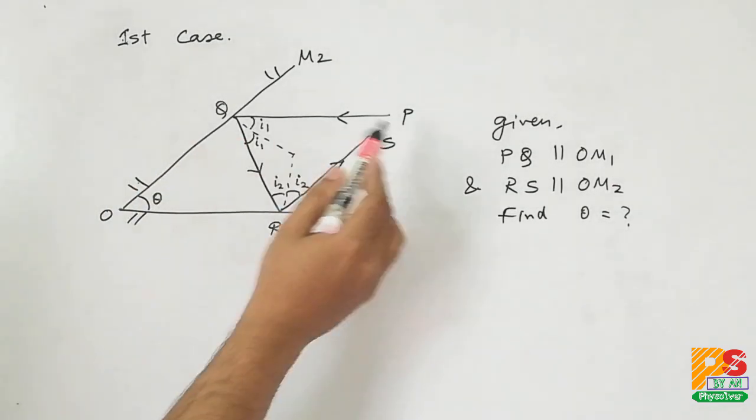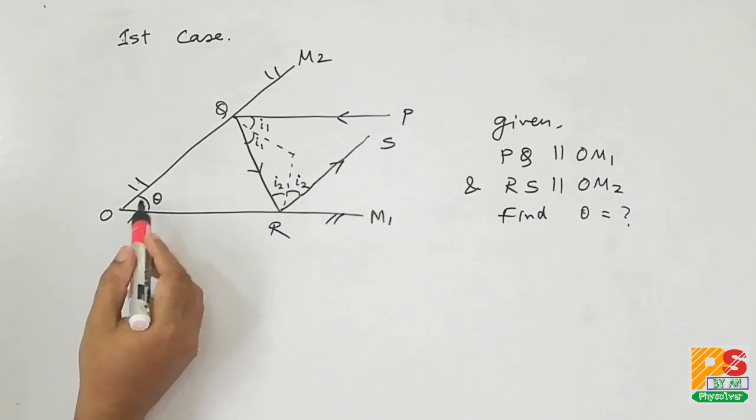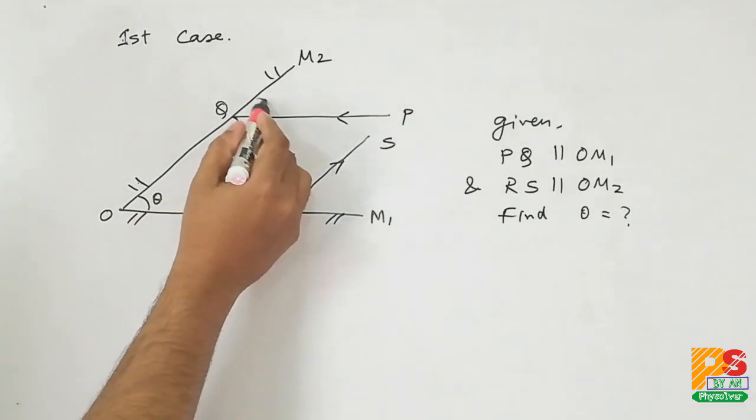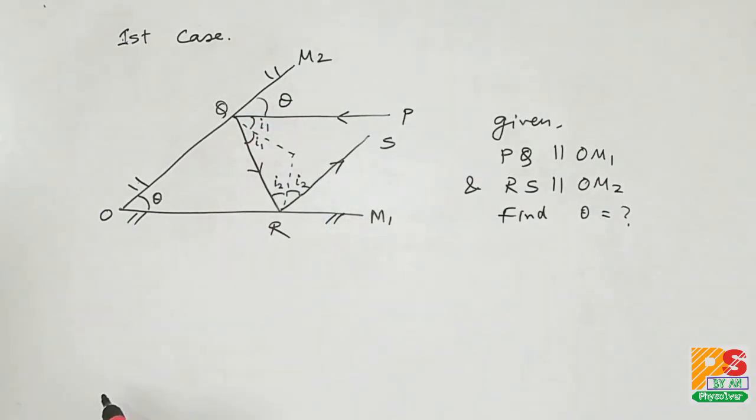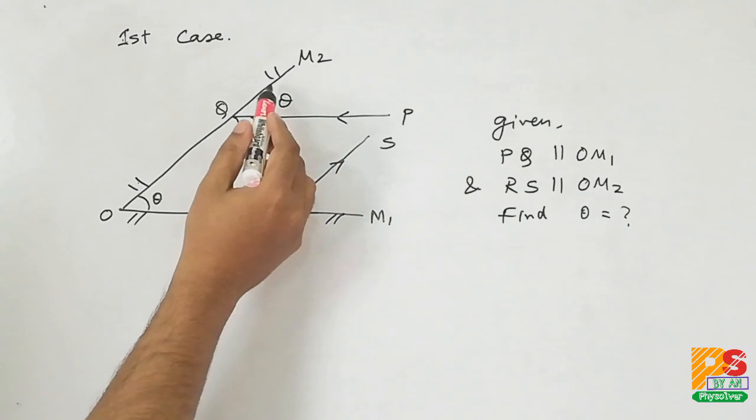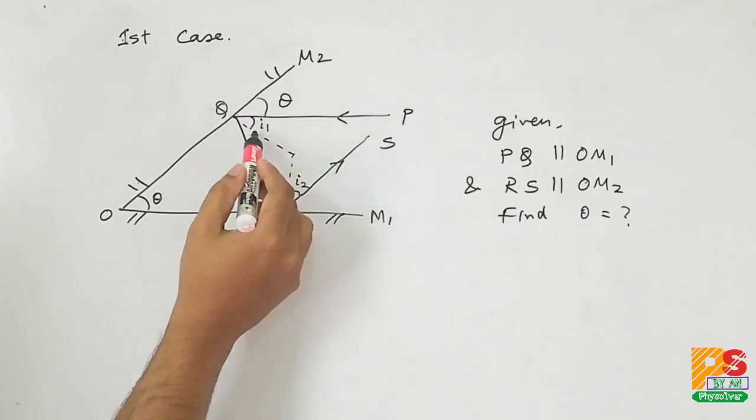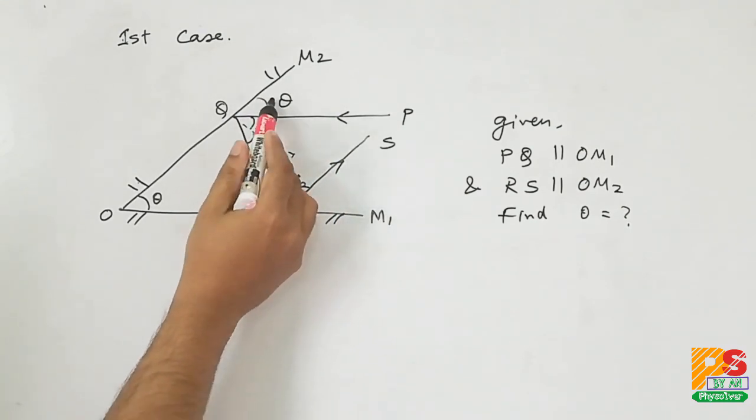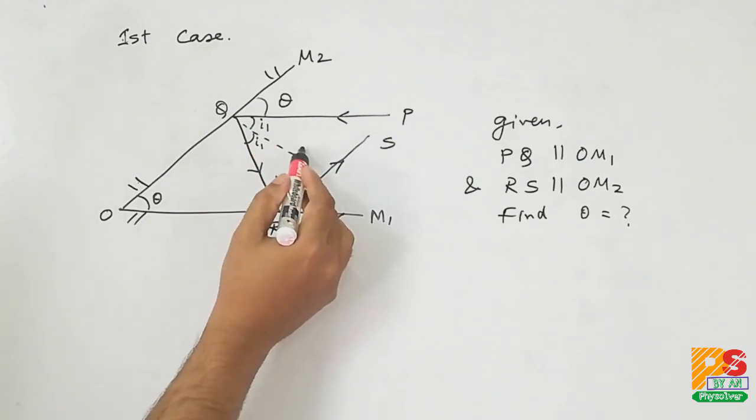Now since PQ parallel to OM1, these two angles should be equal because they are corresponding angles. Now if you look carefully, these two angles will add up to 90 degrees.